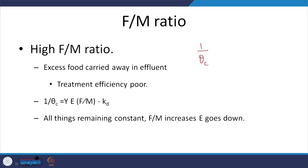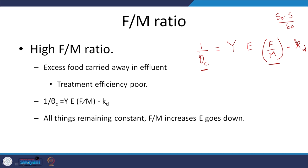By playing around with variables, the efficiency E equals (S0 minus S) divided by S0, times F/M times Y, minus KD. When F/M is high, theta_c will be less and cell residence time will be less. If we keep cell residence time the same and increase F/M, the efficiency of the process will obviously come down.